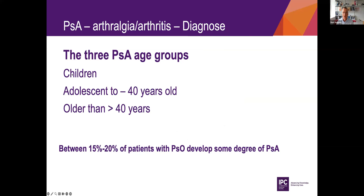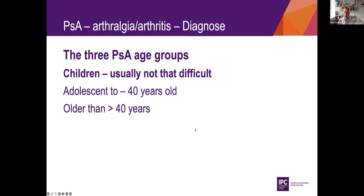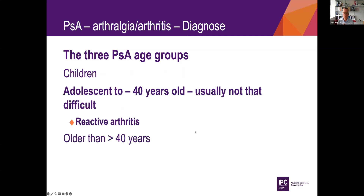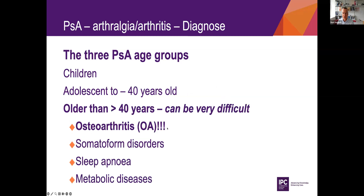We often divide patients into roughly three groups to distinguish what is most likely. If it's children, it's usually not that difficult to spot a psoriatic disease. Moving up to adolescence, they are also quite easy to identify. It can be reactive arthritis, so we have to look for, for example, venereal diseases or gastrointestinal diseases. The huge problem arises when they pass 40 years, because then osteoarthritis starts to be a problem.